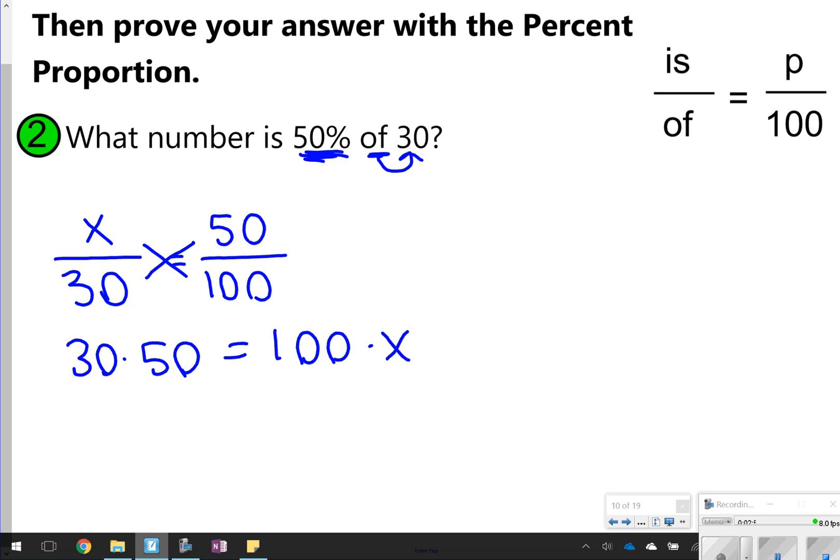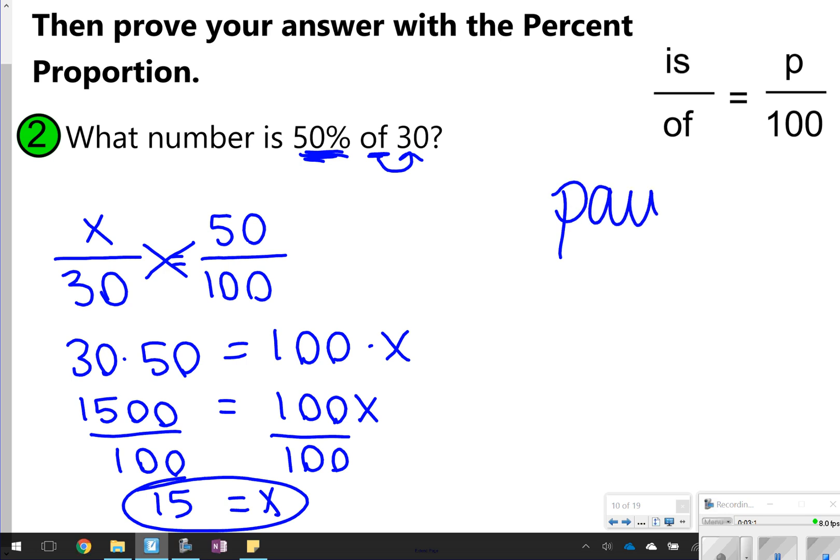And then all I have to think about now is this 30. 30 is either going to be the part or the whole. And it says, what number is 50% of 30? Normally, the number right after 'of' is the 'of' number. So 30 would go on the bottom, which means we don't know the part yet. So we'd put an x for the part.